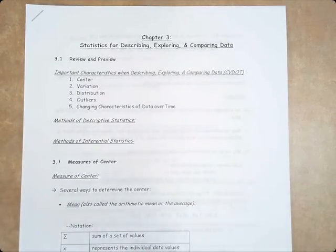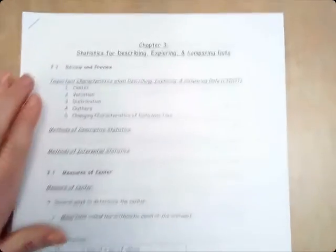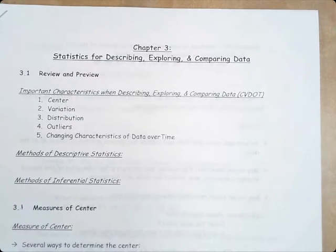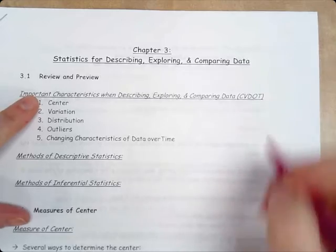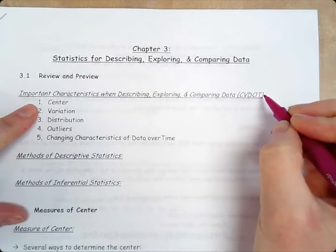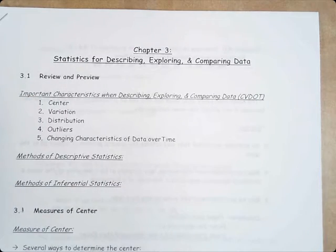So chapter three, this is 3.1. We are looking at data and being able to describe that data. Important characteristics when describing, exploring, and comparing data is CVDOT: Center, Variation, Distribution, Outliers, and Changing Characteristics of Data Over Time.